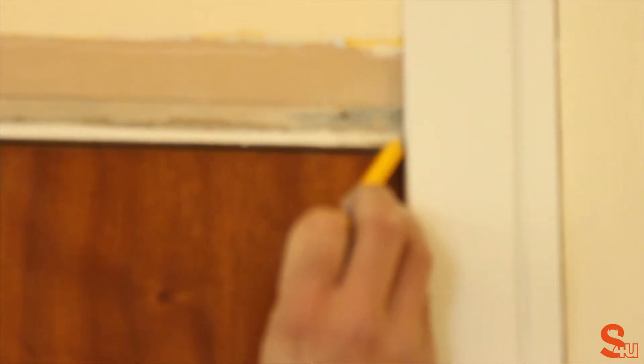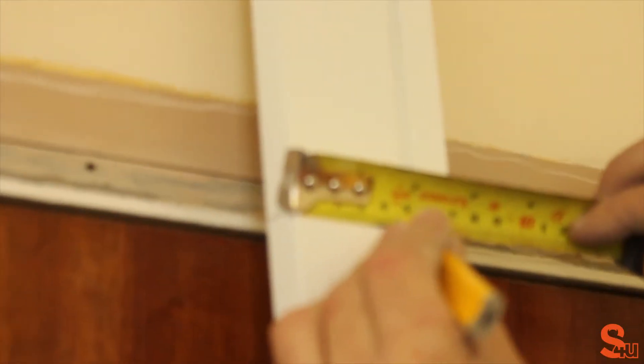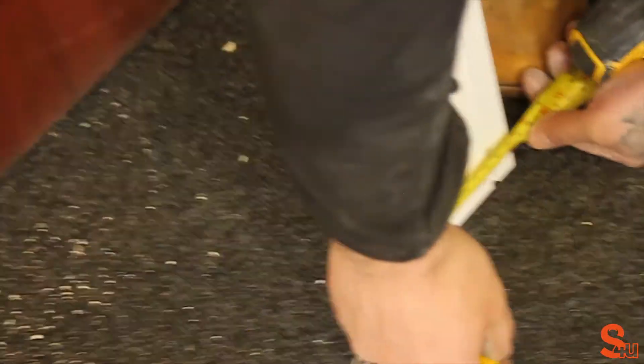We're marking here where the 45 degree cut needs to be on the board, where it intersects the top piece. So we can extend that line. Here we've just marked the top width from the wall onto the board, which we just measured. Then we're going to mark the bottom width from the board, again which we just measured.